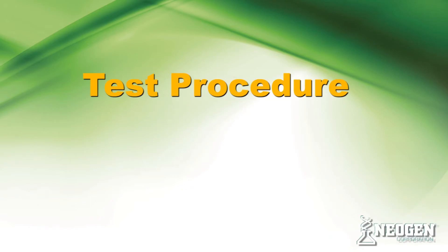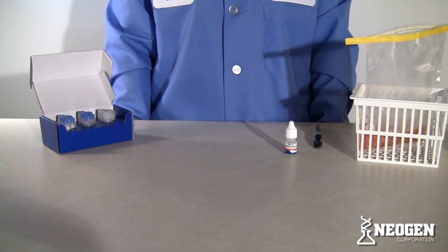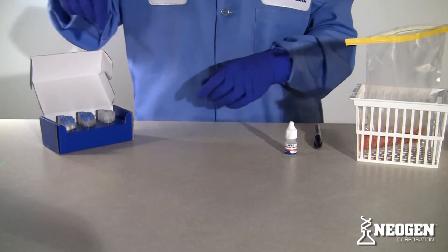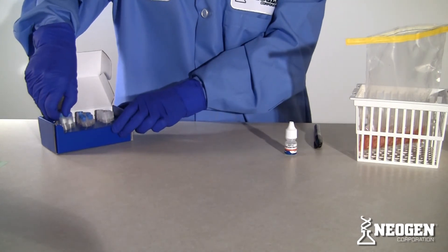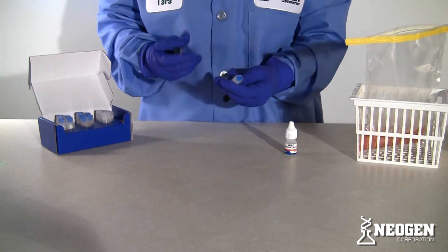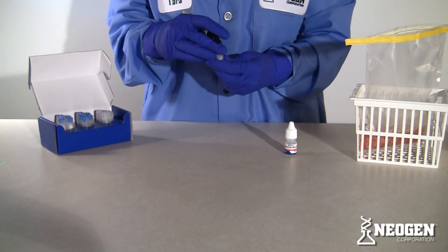Test procedure. To begin the test, gather the required number and species combination of immunosticks, enzyme reagent, and buffer tubes. Mark the tubes with sample identification.